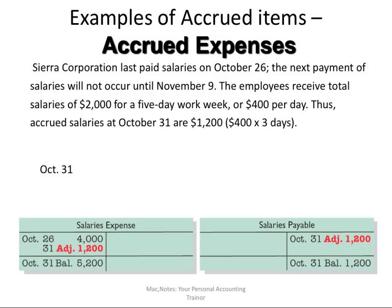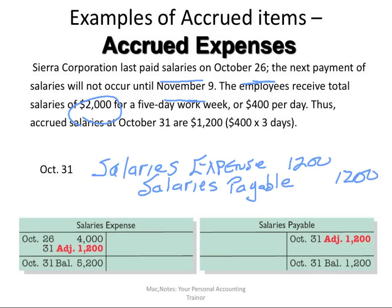For example, Sierra Corporation last paid its salary on October 26th. The next payment will not occur until November 9th. The employees receive total salaries of $2,000 for a 5-day work period, or $400 a day. Thus, they have earned $1,200 that has not been recorded. So I must adjust my records before doing financial statements and recognize this expense in the current accounting period prior to October 31st. To do that, I debit salary expense $1,200 and set up a salaries payable — a liability account — of $1,200, which is true as at October 31st.